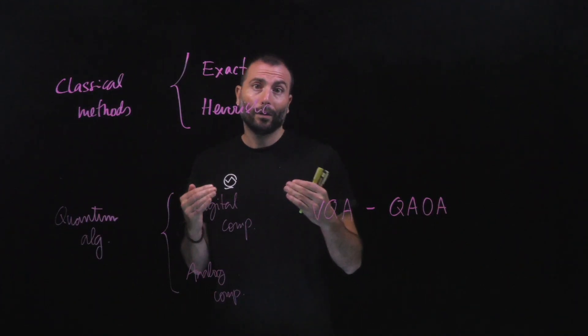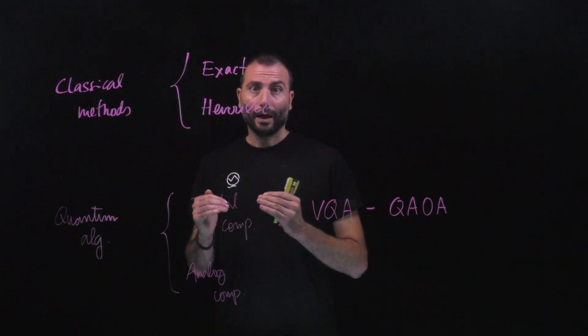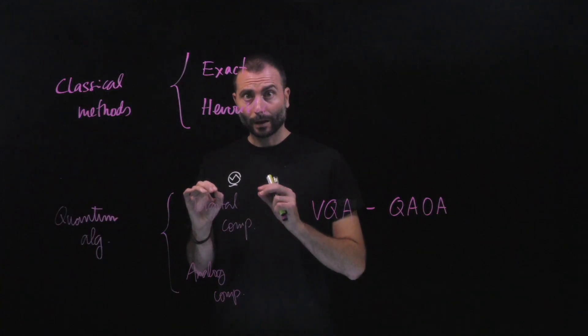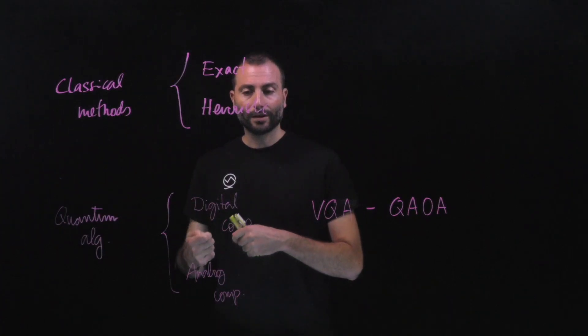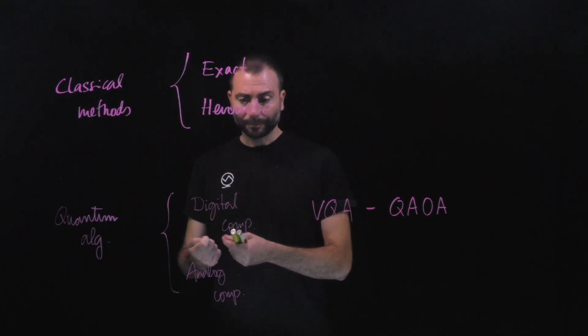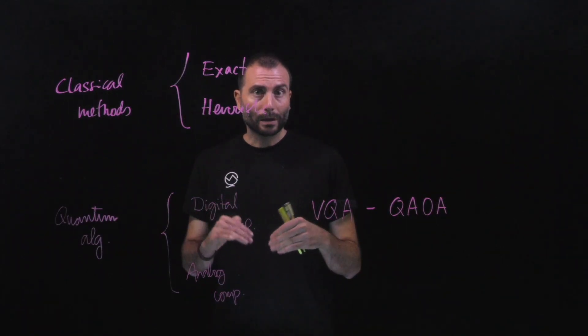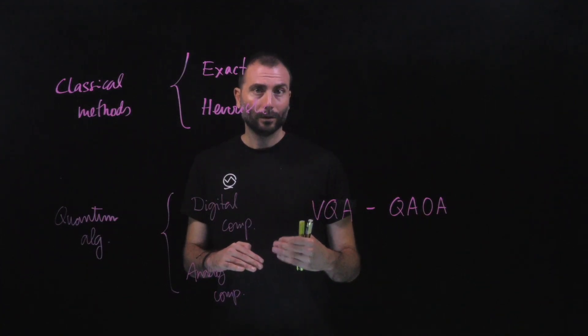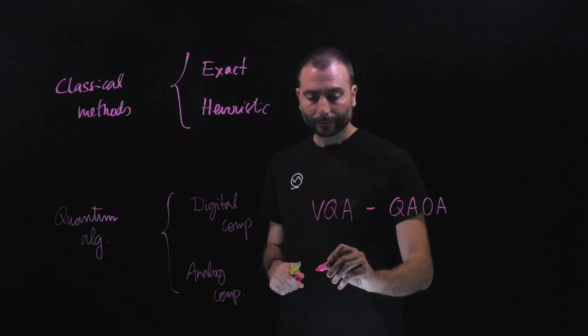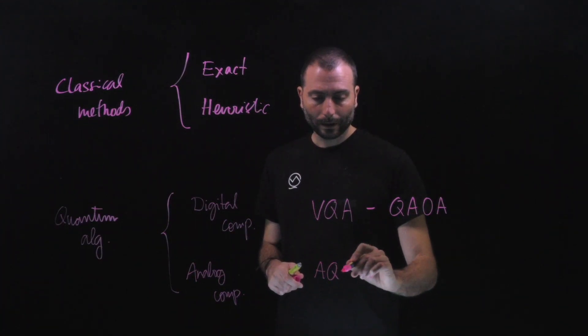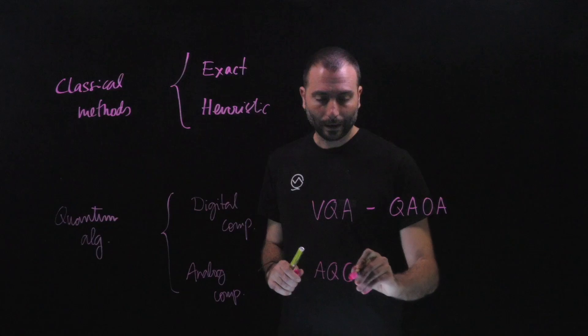Usually, you initialize your system in the ground state of a Hamiltonian that's easy to prepare, and then dynamically you change the Hamiltonian along time and transform it into a new Hamiltonian whose ground state encodes the solution of the problem you want to solve. This is the main idea behind adiabatic quantum computation. Adiabatic is because the evolution of the system is so slow that the system remains in the ground state. We will give the details of this paradigm, of this algorithm, in lecture five.